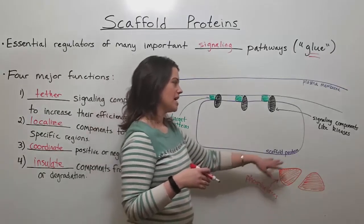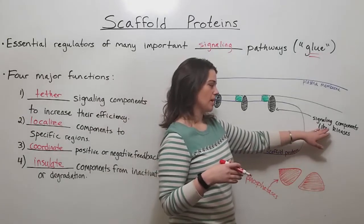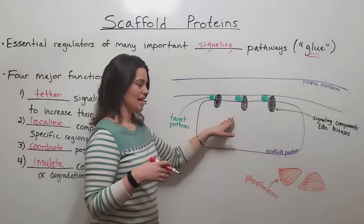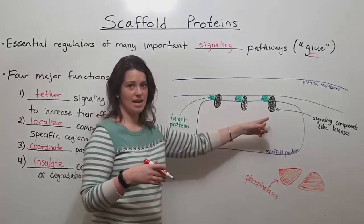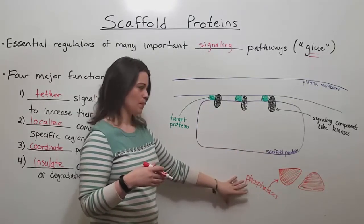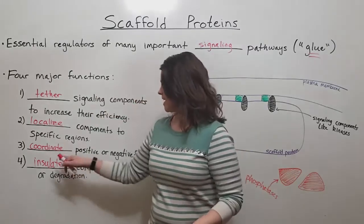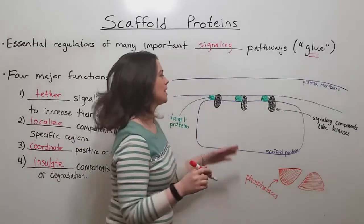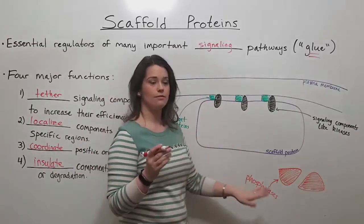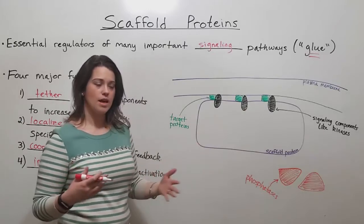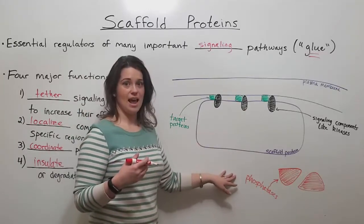Phosphatases can inactivate these kinases. However, scaffold proteins can protect kinases from being inactivated by phosphatases, basically just by keeping them apart. By insulating these components and keeping the kinases safe from the phosphatases, the kinases have a chance to do their job and the phosphatases cannot inactivate them.